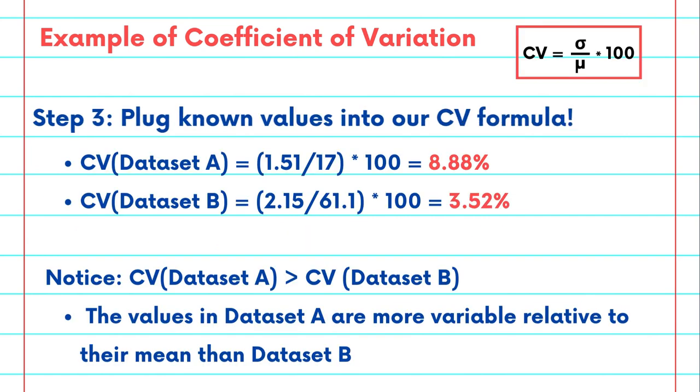Now that we have the mean and the standard deviation, we can plug those numbers into our Coefficient of Variation formula. Here, we can see that CV for Dataset A is equal to 8.88%, while the CV for Dataset B is equal to 3.52%.